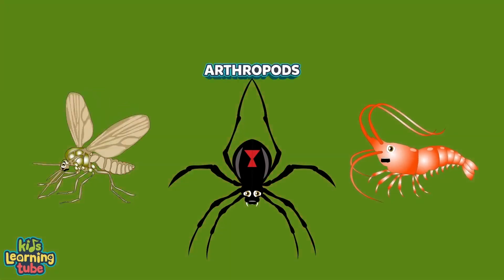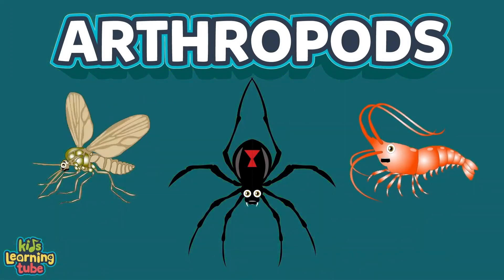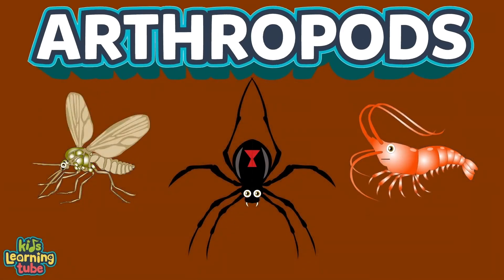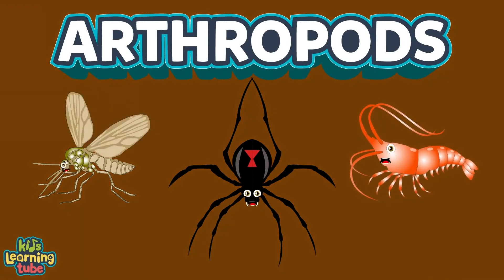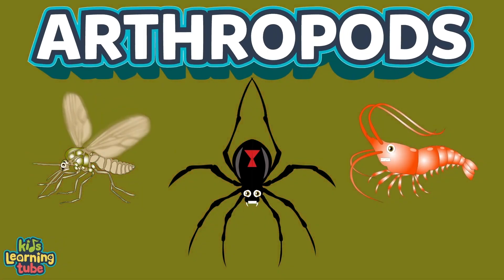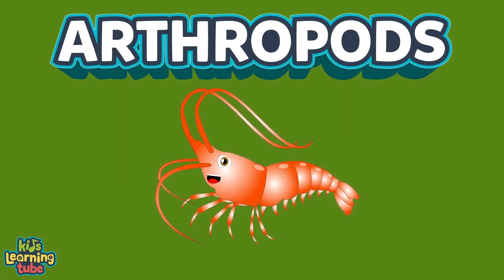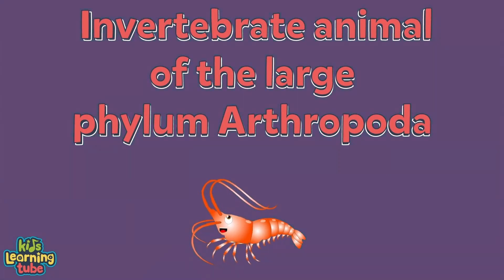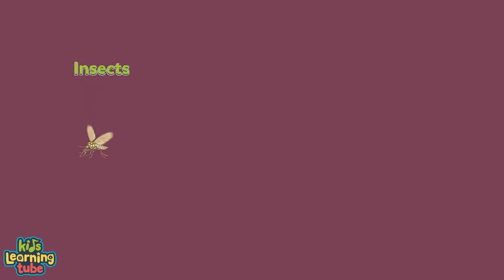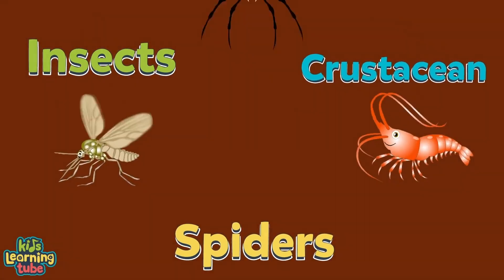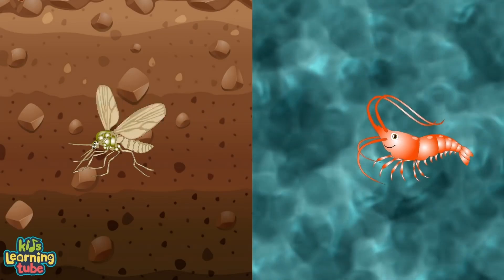We're some arthropods — we've been here on earth for 541 million years since we were birthed. There are more arthropods than humans. An arthropod is an invertebrate animal of the large phylum Arthropoda — we include insects, spiders, and crustaceans, found in water or on land in any nation.